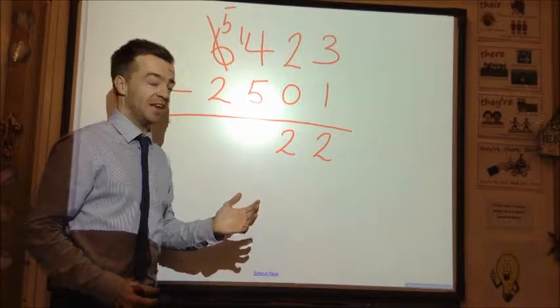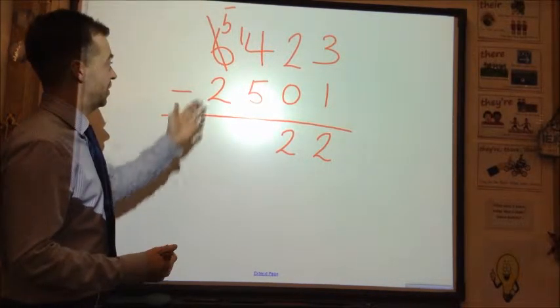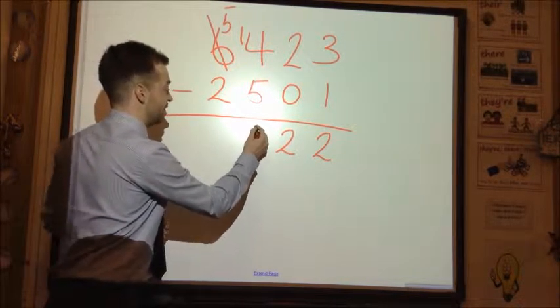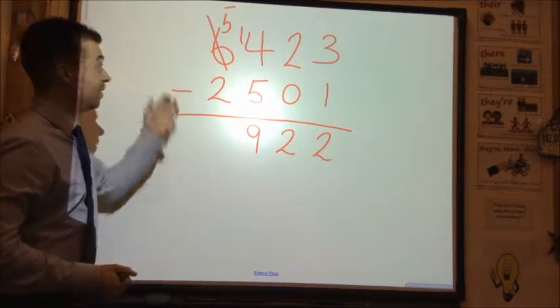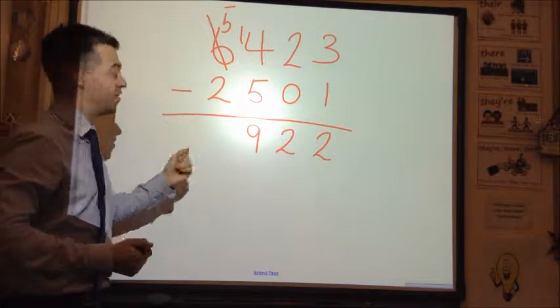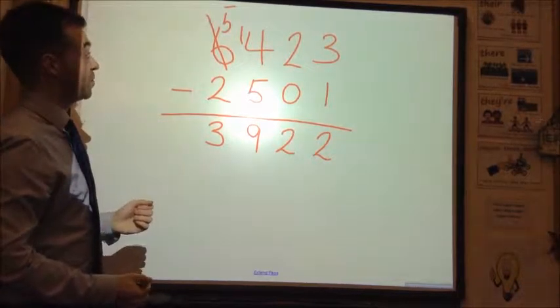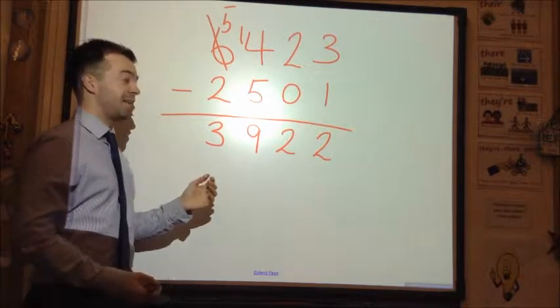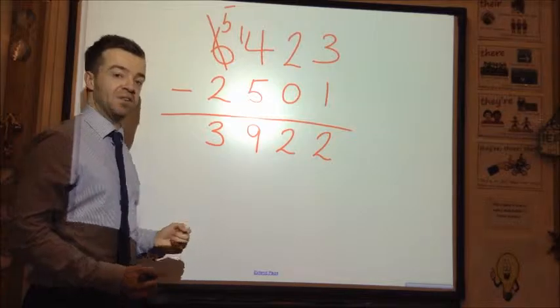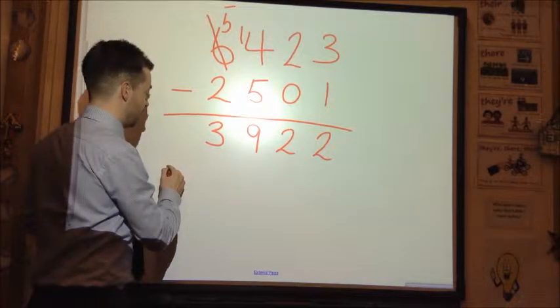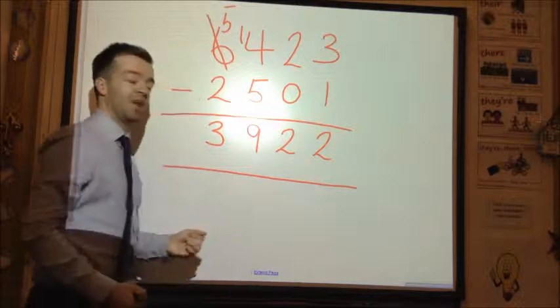Now we have 14 take away 5, which we definitely can do. 14 take away 5 is 9. And now to finish off the thousands column, we've got 5 take away 2, which is 3. So 6,423 take away 2,501 is 3,922. We underline that again. Column subtraction done.